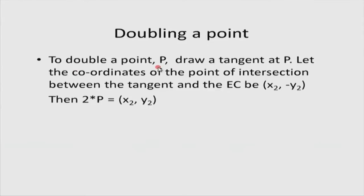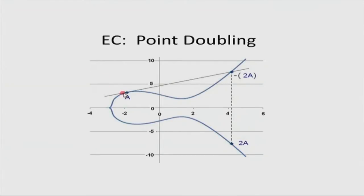The third operation is doubling of a point. To double a point P, draw a tangent at P. Let the coordinates of the point of intersection between the tangent and the elliptic curve be (x2, -y2); then the coordinates of 2P are (x2, y2). Geometrically, to compute 2A, I draw a tangent at point A, see where it hits the curve at another point, and then take the mirror image of that intersection point. The formulas for the coordinates x2 and y2 of the point 2P are expressed in terms of the coordinates (x1, y1) of P.